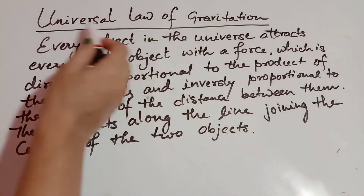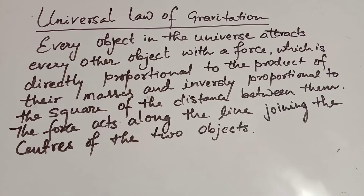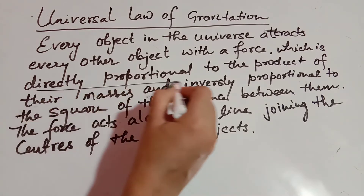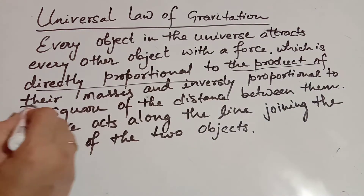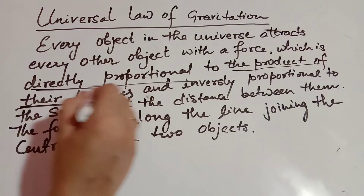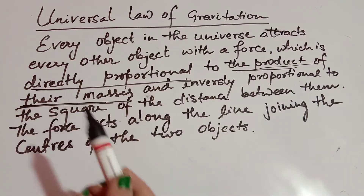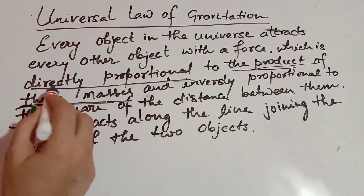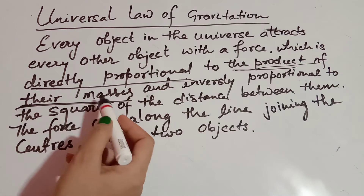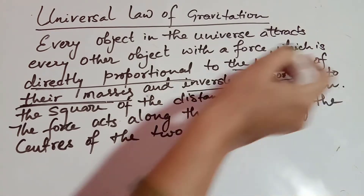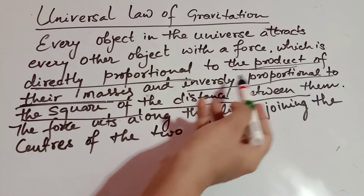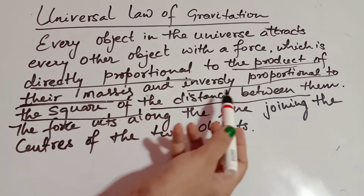The universal law of gravitation states that every object in the universe attracts every other object with a force which is directly proportional to the product of their masses, and inversely proportional to the square of the distance between them.